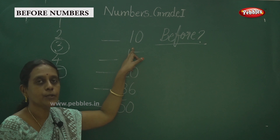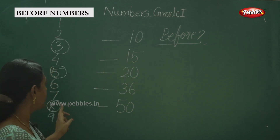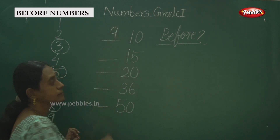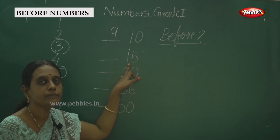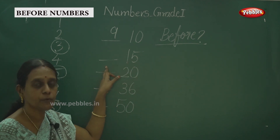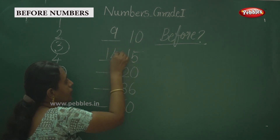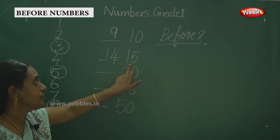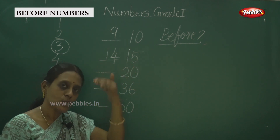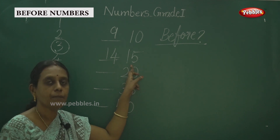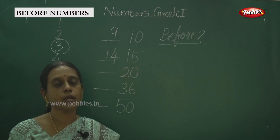So this is what? 10. What comes here children — before? That is 9. And this one is what? 15. What comes before 15? The number before 15 is 14.